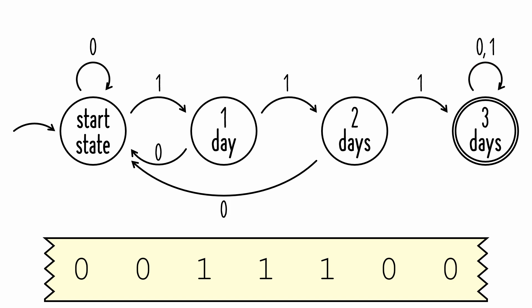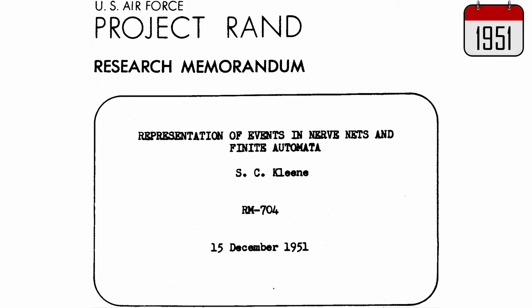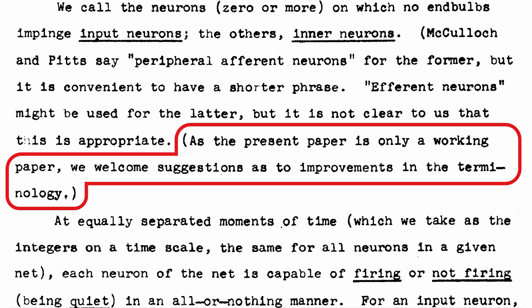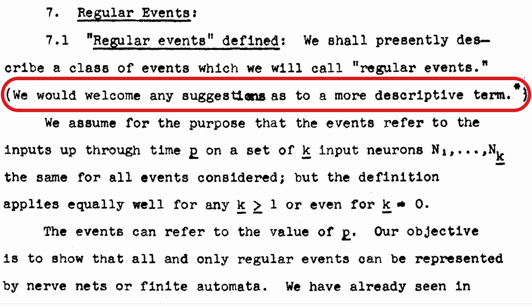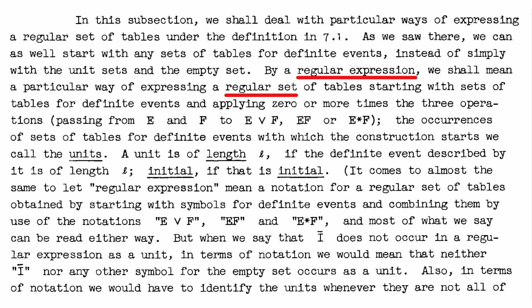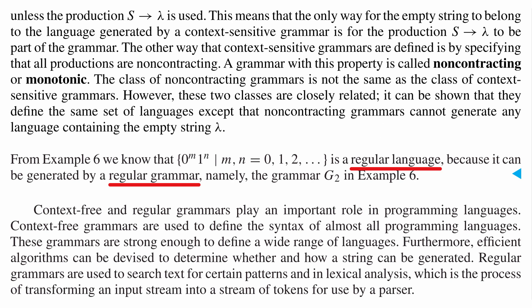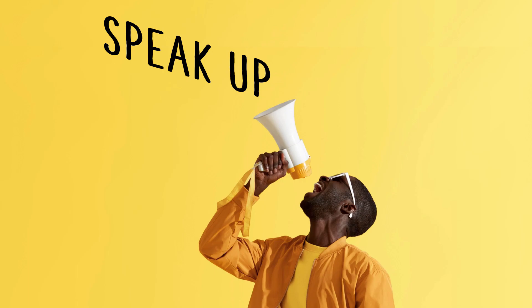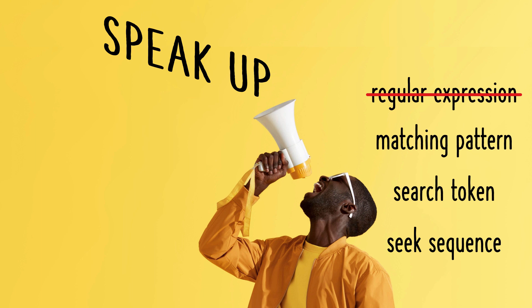Now let's see how Dr. Kleene simplified this process. In his 100-page research paper, he made points like this several times: 'As the present paper is only a working paper, we welcome suggestions as to improvements in the terminology.' And when he first used the word 'regular,' he reiterated that he would welcome any suggestions as to a more descriptive term. He obviously didn't get any better suggestions, because when his paper was published, he doubled down on the word 'regular' and coined two more terms: regular expressions and regular sets. So the next time someone asks for suggestions, speak up — we could have had a much better name than 'regular expression.'